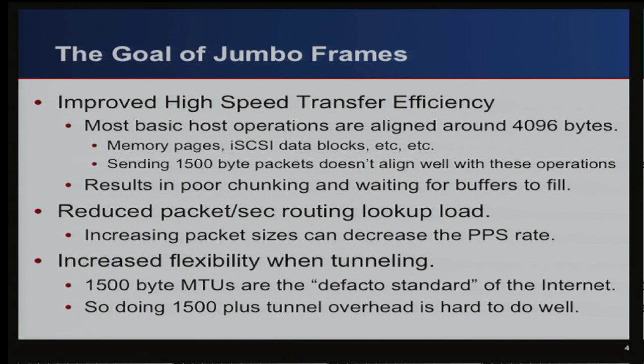The third argument for jumbo frames is increasing flexibility when tunneling. 1500 bytes because of Ethernet is really the de facto standard of the internet — you rarely see packets larger than 1500 bytes cross the internet — and that's why tunneling 1500 bytes plus tunnel overhead is so hard to do.